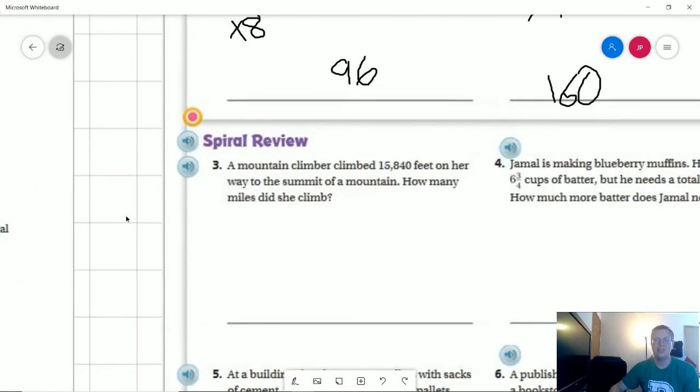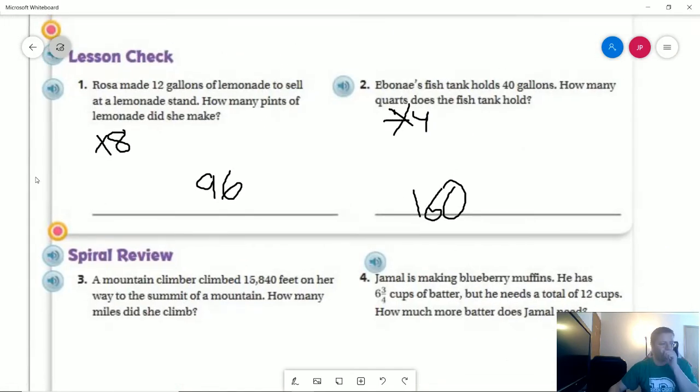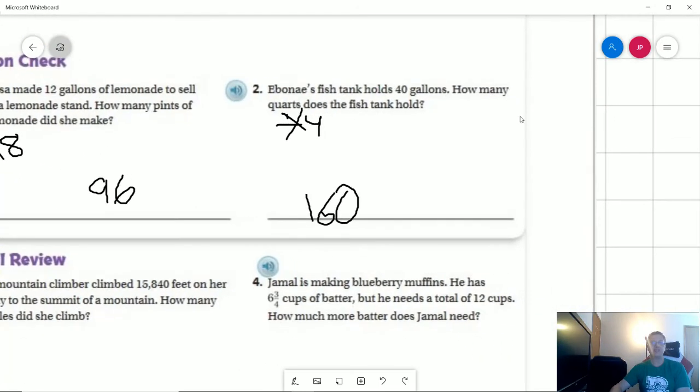Let's go ahead and take a look at the two problems on the back. Rosa made 18 gallons of lemonade. We can multiply that by eight to get the number of pints, and that would give us 96. I started to do division for this one and then realized as I started to talk that that was not the correct symbol.